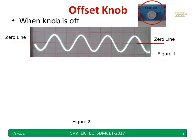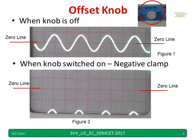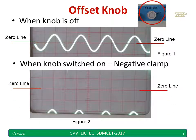When the Offset knob is OFF, you will find there is no DC shift — there is no clamping at all. The positive half cycle will be equal to the negative half cycle. When you suddenly switch on the DC Offset knob, you will find there is a maximum negative clamp. The complete waveform will be below the zero line. This can be observed in figure number 2.